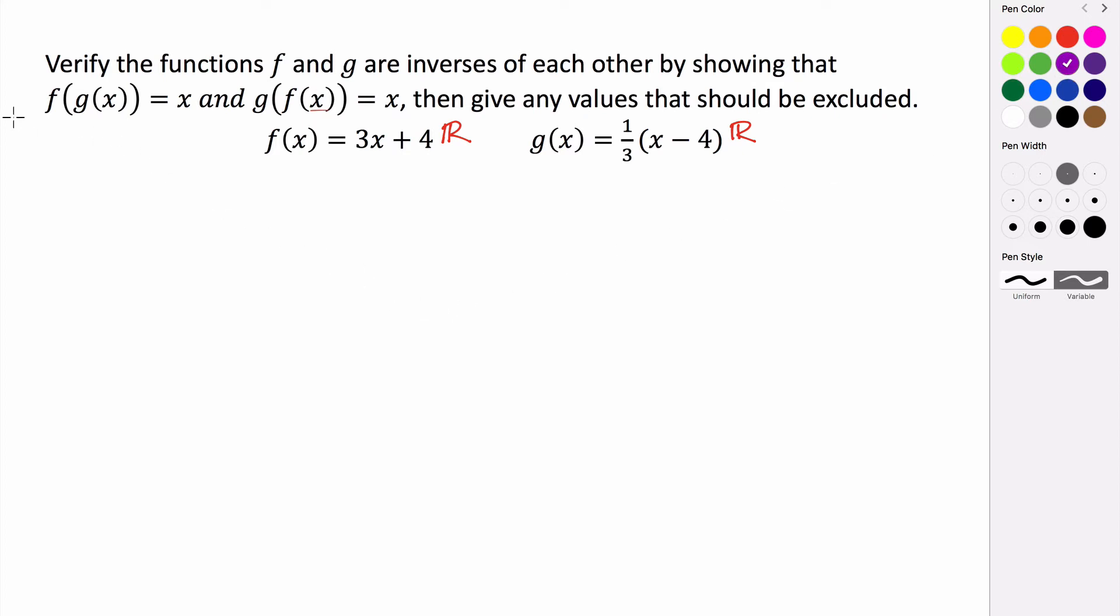So let's try this first one. Let's take a look at this first composition. So what is f of g of x going to be? So if I compose f with g, that means I'm evaluating f at the entire function of g of x, which is one third times the quantity x minus four. So I'm basically taking this and substituting it in for x in f.